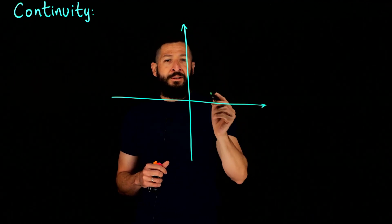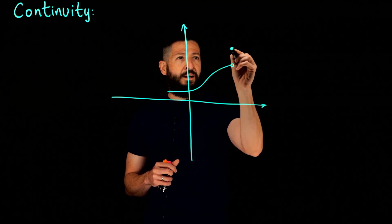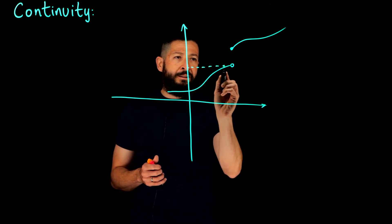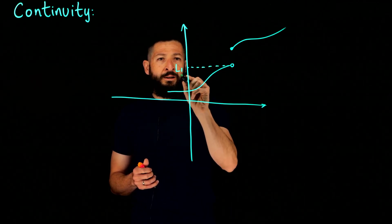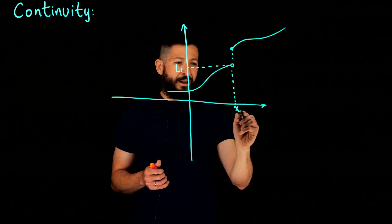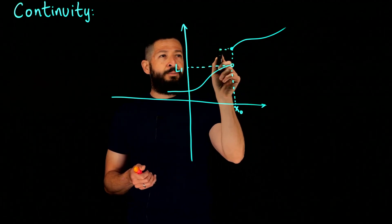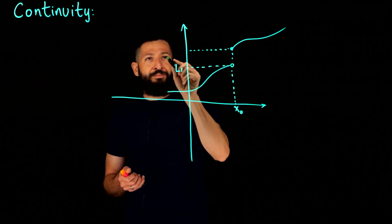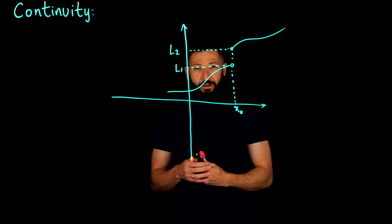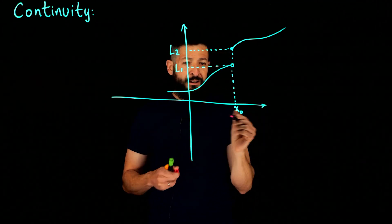Let's say we have a function that does something like this — it stops here, goes up, and continues. Let's say this number here we call L1, and this is going to be X_naught. Let's give it a name, and this one is going to be L2.